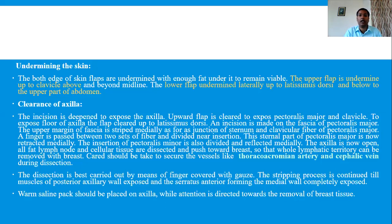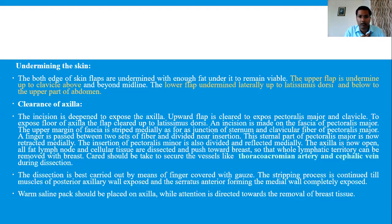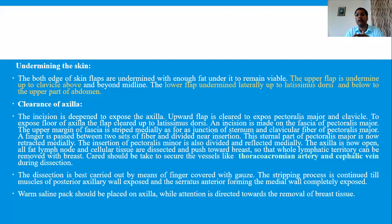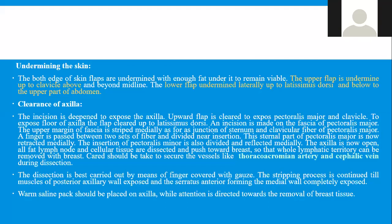There are two flaps — upper and lower. The upper flap should be undermined superiorly up to the clavicle and medially toward the sternum. The lower flap should be undermined laterally up to the latissimus dorsi side and inferiorly up to the upper part of the abdomen at the rectus muscles. All the skin is freed from the underlying structures, since everything below will be removed.